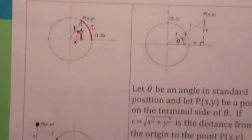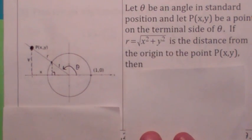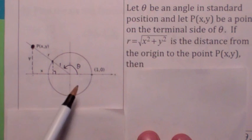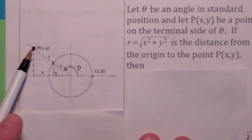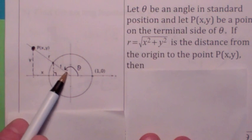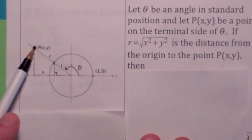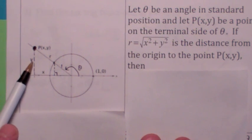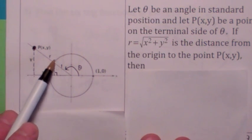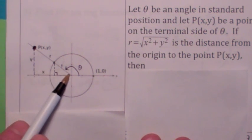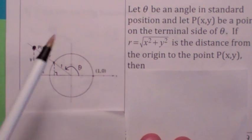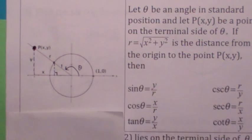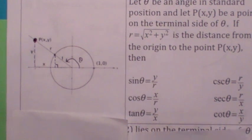So what we're doing now is: suppose you have an angle theta in standard position — the one drawn here is in the second quadrant. Suppose p(x, y) is any point on the terminal side of theta. We can compute r, which is the hypotenuse: r equals the square root of x squared plus y squared, and r is always positive.